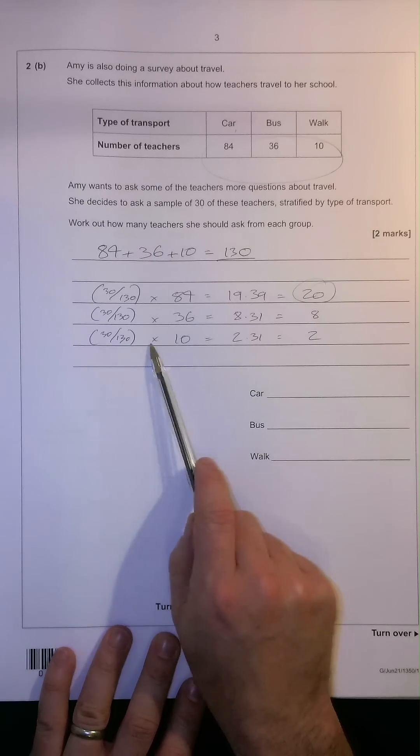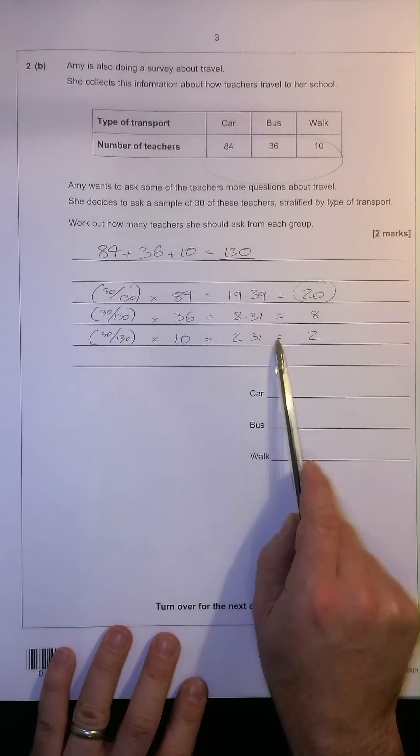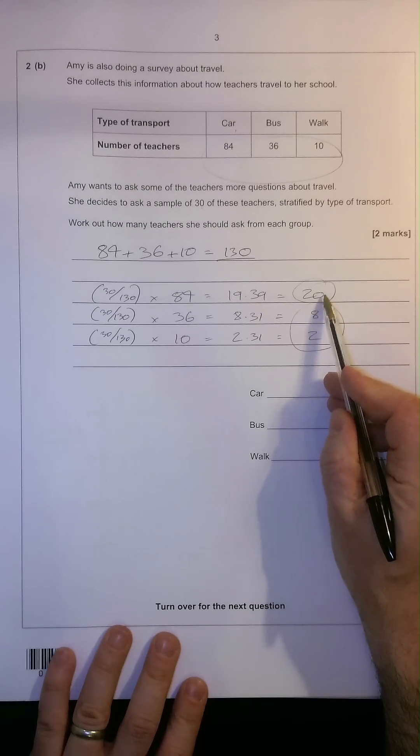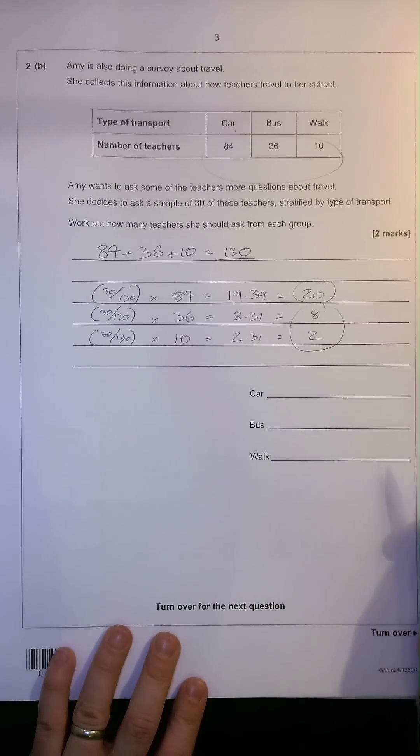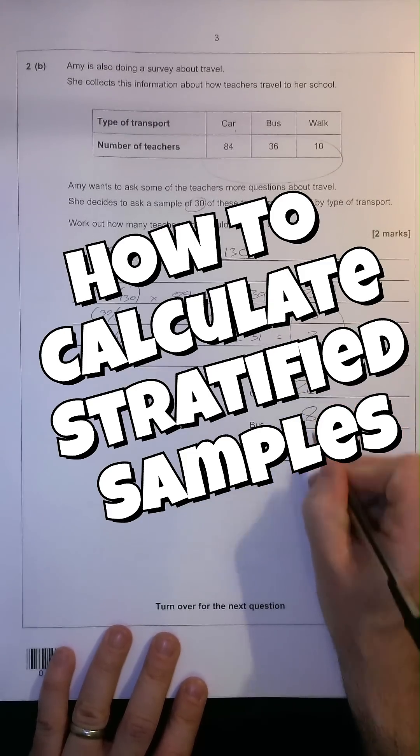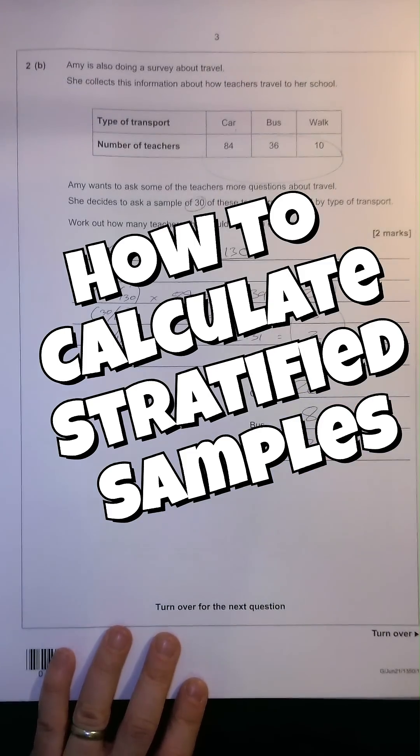30 over 130, times 10, 2.31. And that gives us 2. And therefore, we can count up 20 plus 8 plus 2. Is that correct? Yes. 30 in the total sample. Put our answers here. 20, 8 and 2. Two marks in the bag.